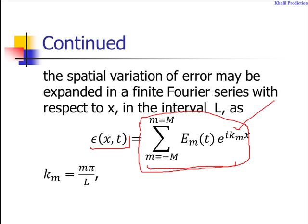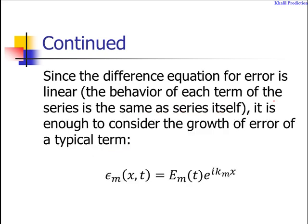We will consider just one term: the m-th vector of the error equals e_m(t)e^(i k_m x). We have assumed that each term, for each value of m, behaves the same.